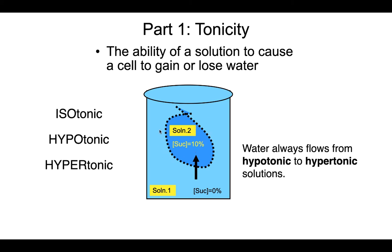We can incubate that mock cell in a beaker with other solutions. In this example, we are incubating the dialysis tubing in a beaker of 0% sucrose solution. When we talk about tonicity, you must first look at the two solutions being compared — the outside solution versus the solution inside the membrane. The solution with the higher solute concentration is the hypertonic solution. Hyper means more or higher, so in this case, the 10% sucrose inside is hypertonic. Hypo means lower — that's the solution with lower solute concentration. So 0% sucrose is hypotonic.